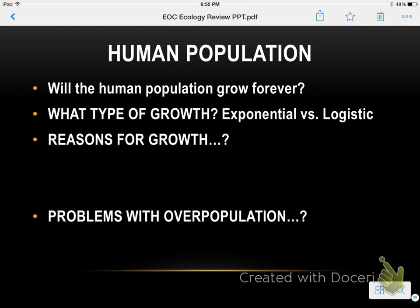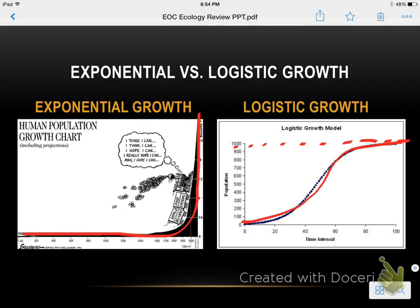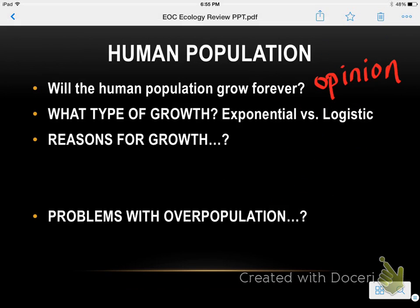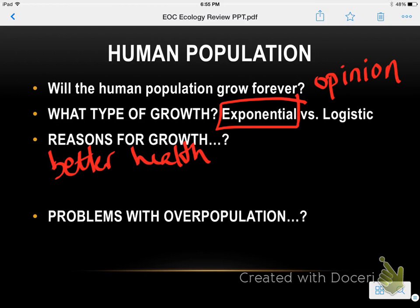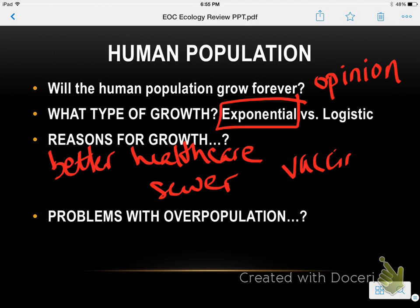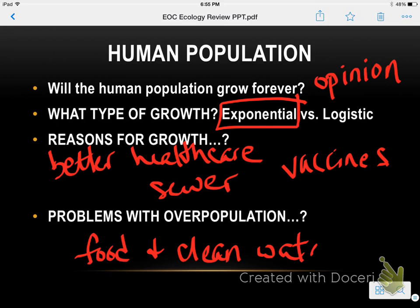For human population, there are some general questions: will the human population grow forever? It's kind of an opinion — some scientists say yes, some say no. In terms of growth type, exponential versus logistic — we haven't reached carrying capacity yet, so we are still at exponential growth. Reasons for growth include better healthcare, sewer systems, better ways of living, and vaccines. Problems with overpopulation include food and clean water becoming issues. And that's all.